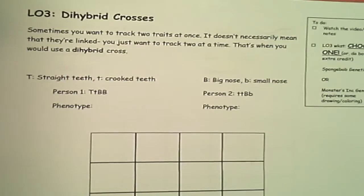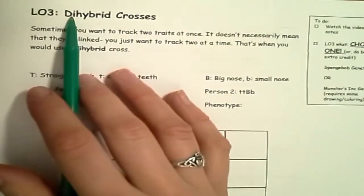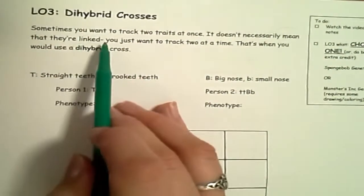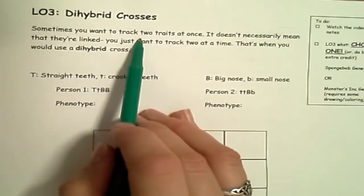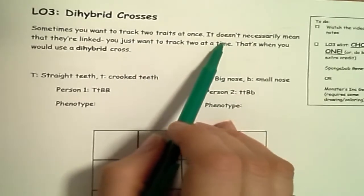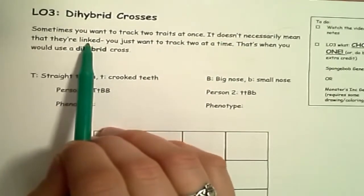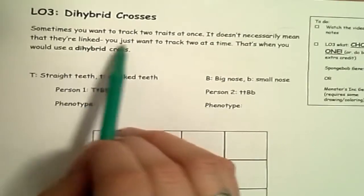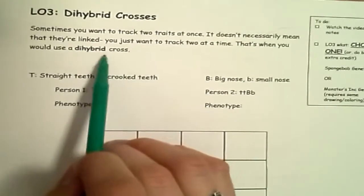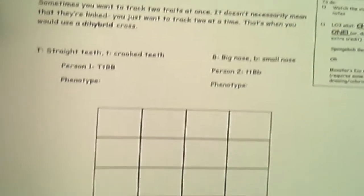Now we're going to get a little more complicated. A dihybrid — 'di' means two — is going to track two traits at the same time. This doesn't mean that they are linked together; they might be inherited separately. It just means we want to track two of them at the same time. This is when you use a dihybrid cross.